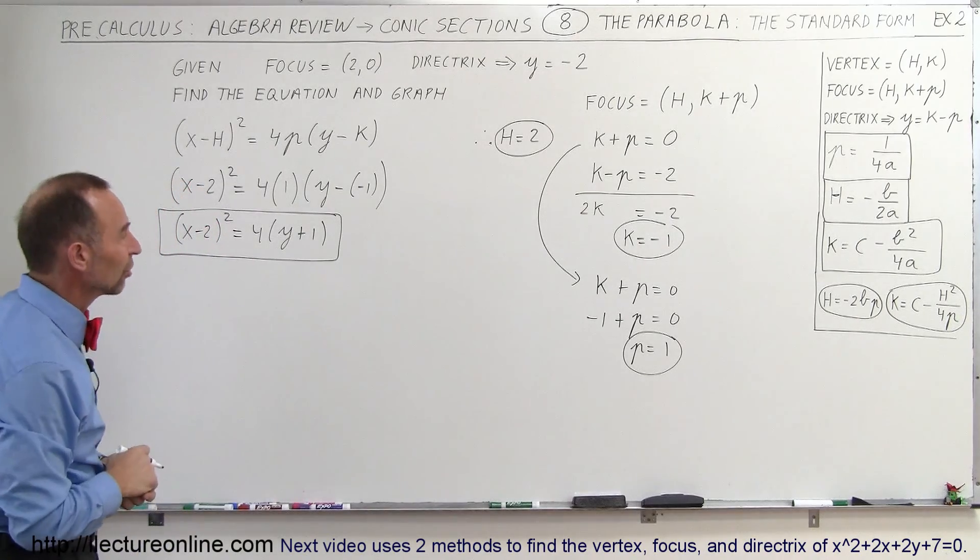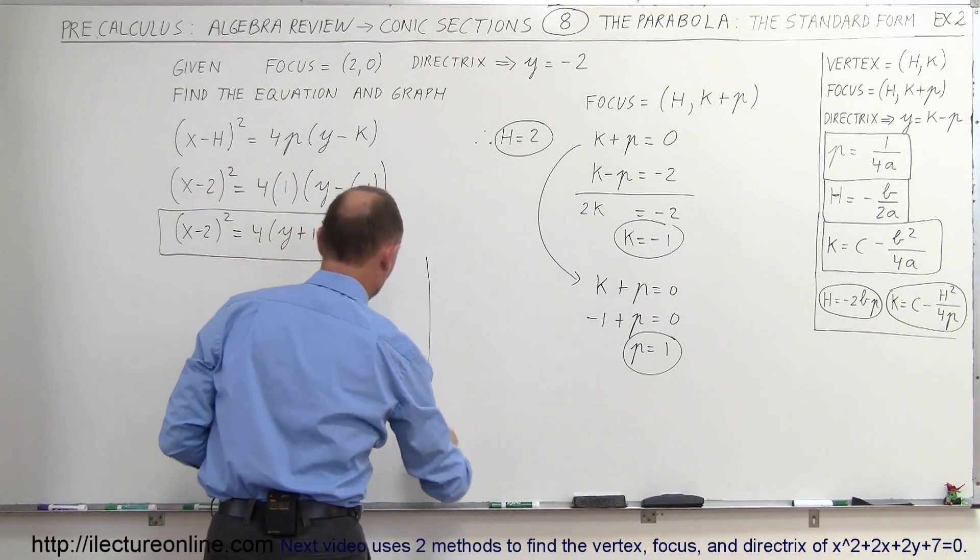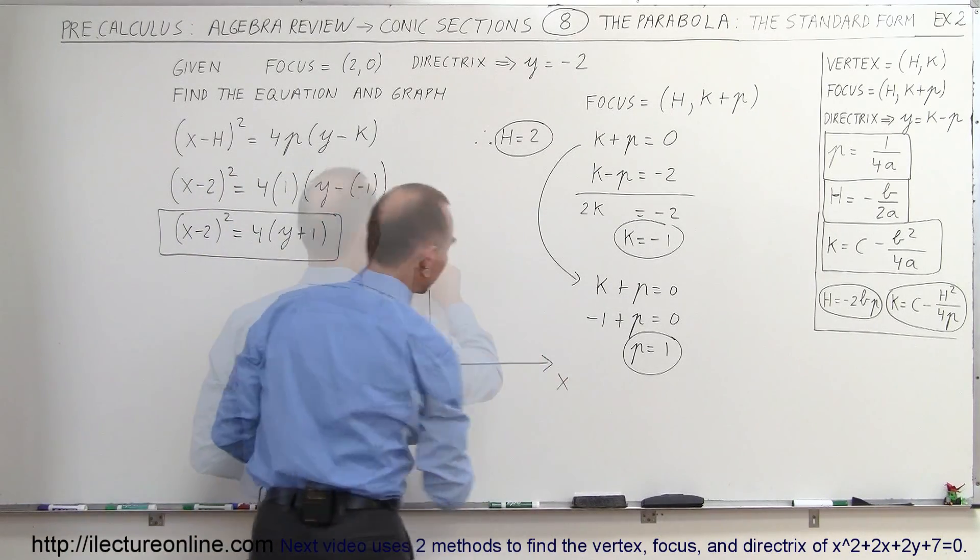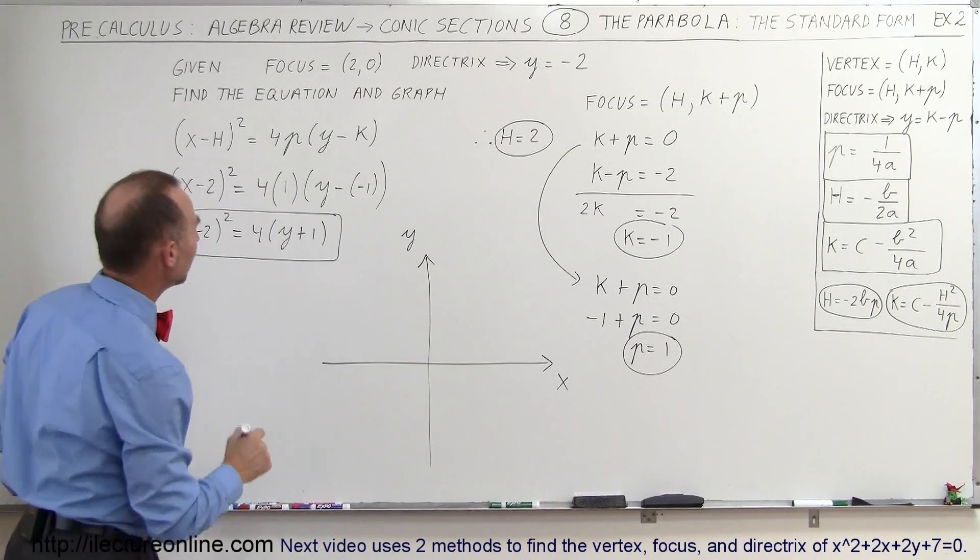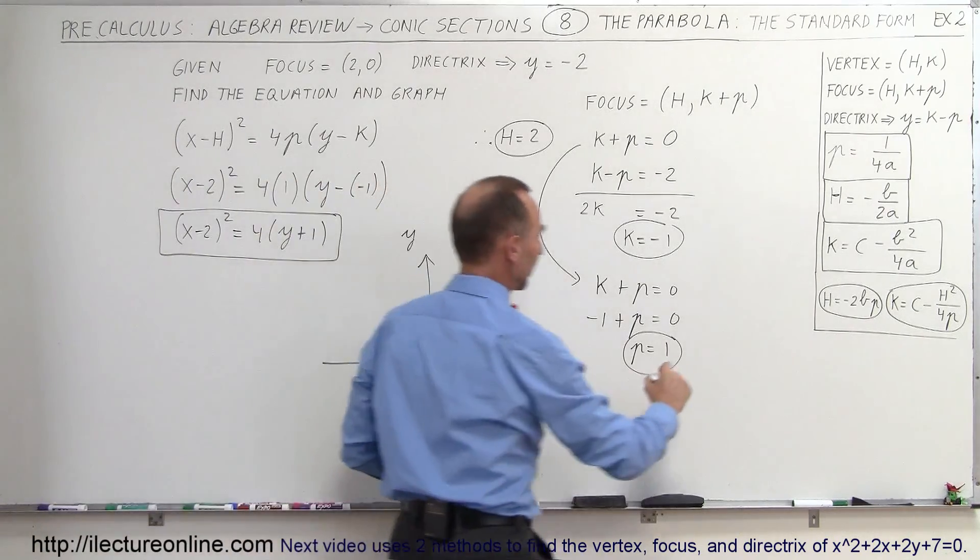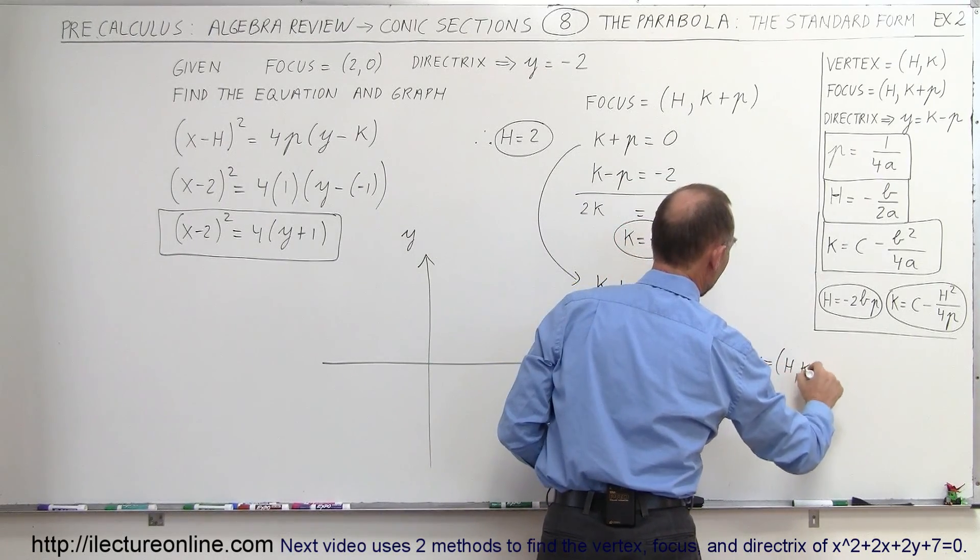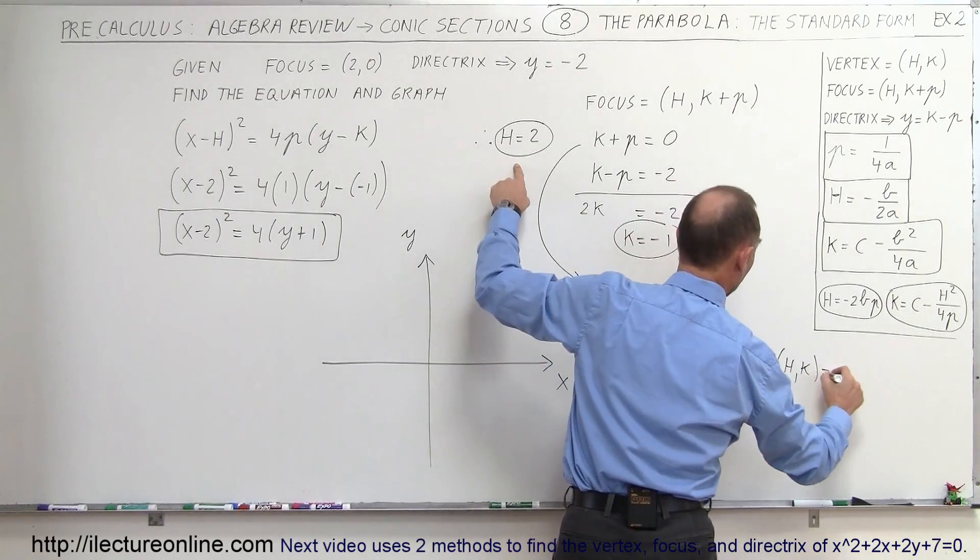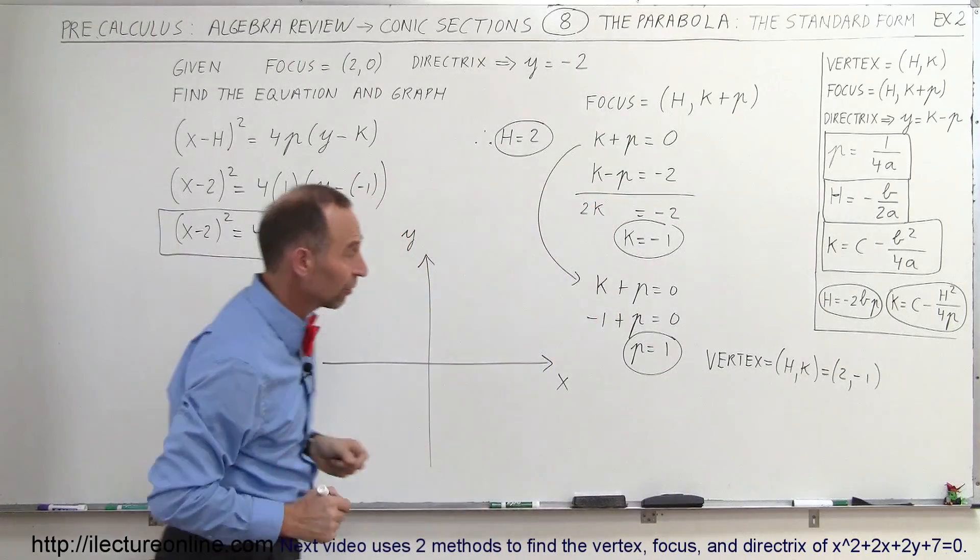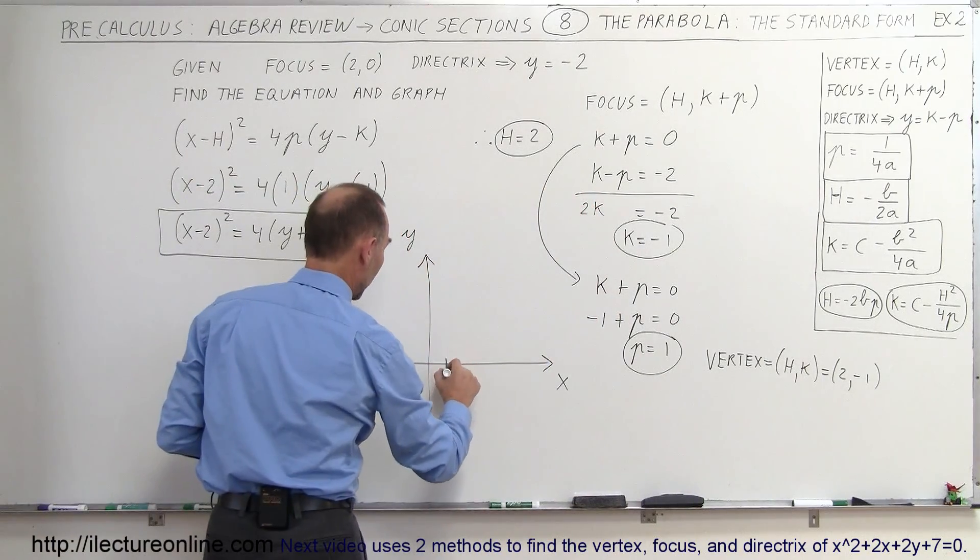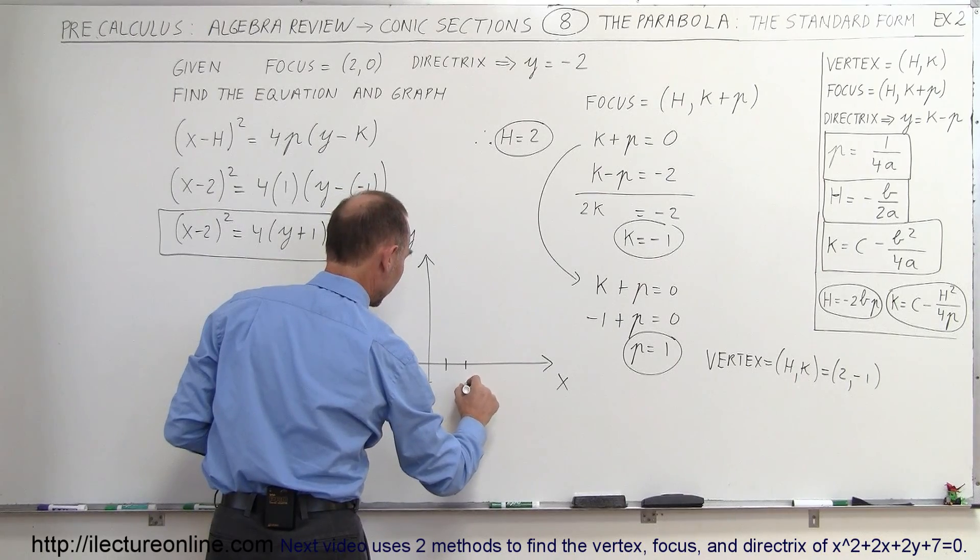Now, we want to graph this, so let's go ahead and put down the x and y axis and we have to find the vertex. Now the vertex is at (h, k), so let's go ahead and write that down. Since the vertex is equal to the coordinates (h, k) and we know that h is equal to 2 and k is equal to -1, that would be the location of the vertex of the parabola. So that would be 2 and -1, right about there. So there's our vertex.